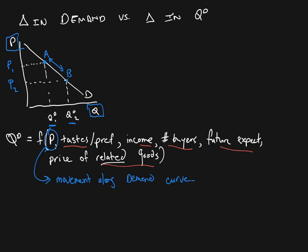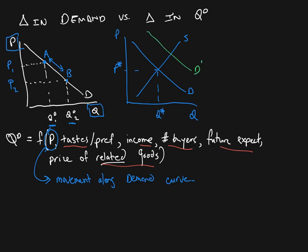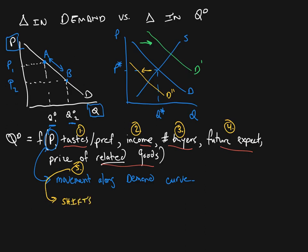So the entire curve is going to shift. We could get an increase in demand, shown with a rightward shift of the demand curve. Or we could get a decrease in demand, shown with a leftward shift of the demand curve. So these other factors — tastes and preferences, income, change in the number of buyers, future expectations, and the price of related goods and services — are all going to cause shifts of the entire demand curve.